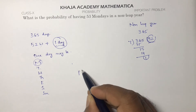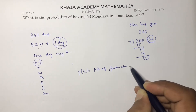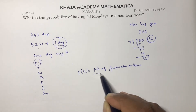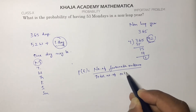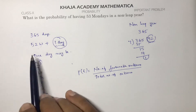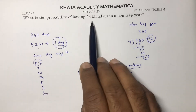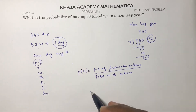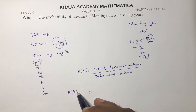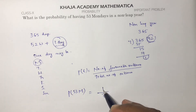The probability of an event is number of favorable outcomes divided by total number of outcomes. With 52 weeks, every day comes 52 times, and this one extra day decides whether we get 53 Mondays or not. There are 7 total outcomes, and Monday appears once, so the probability of getting 53 Mondays is 1/7.